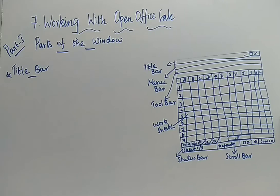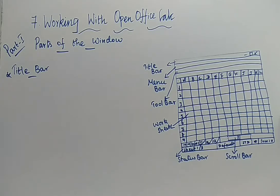This title bar tells you the title of the document — the title of the spreadsheet you have opened. After performing the needed calculations and saving your spreadsheet, the name you have given will replace 'Untitled 1'. For example, if you save the spreadsheet by the name 'sample', in the title bar you will have 'sample'.